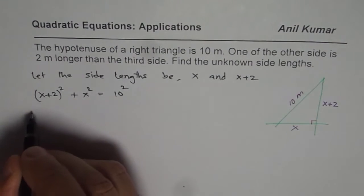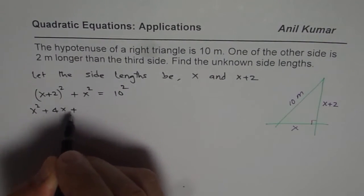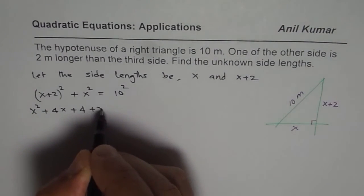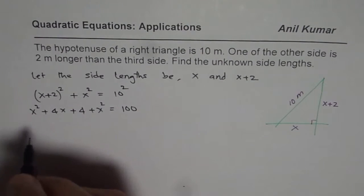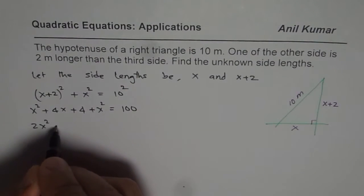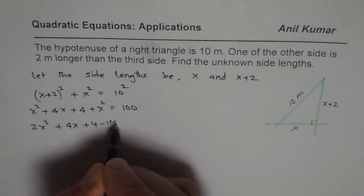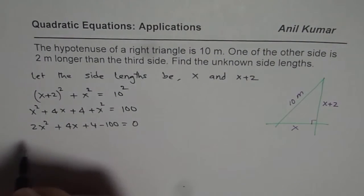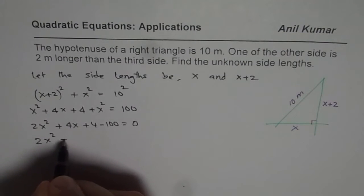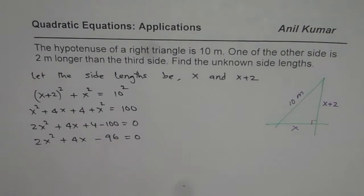Let us expand. We get x² + 4x + 4 + x² = 100. Bringing all terms to one side, we have 2x² + 4x + 4 − 100 = 0. Combining the constants gives us 2x² + 4x − 96 = 0.